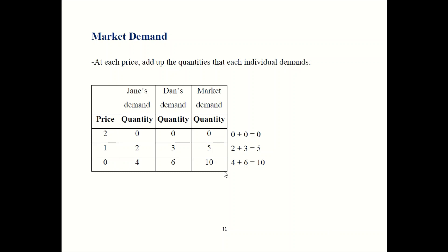When price is two, Jane is going to buy zero units and Dan also buys zero units. If Jane buys zero and Dan also buys zero, the total being bought here is also zero. So market demand is Q equals zero. When the price is one, Jane is going to buy two and Dan is going to buy three. That means the market demand is going to be five.